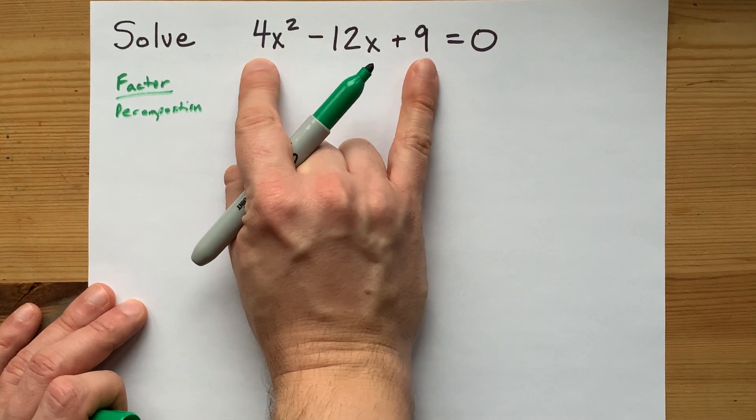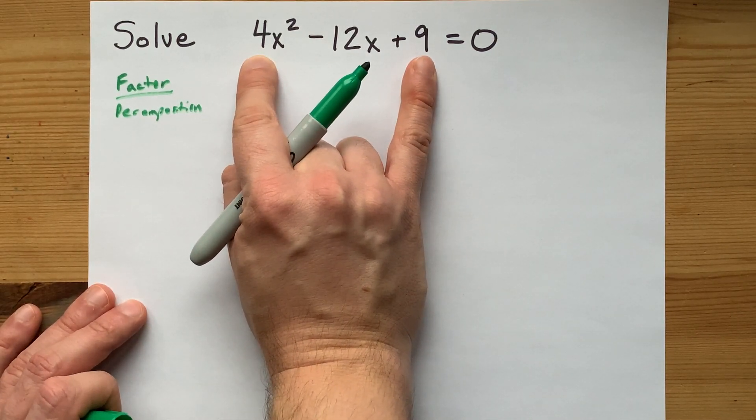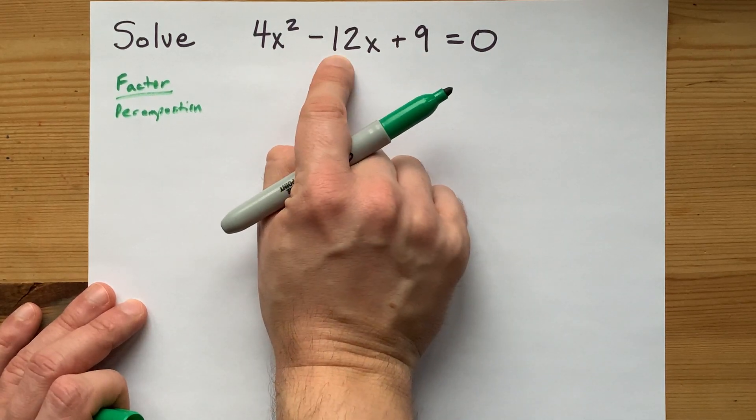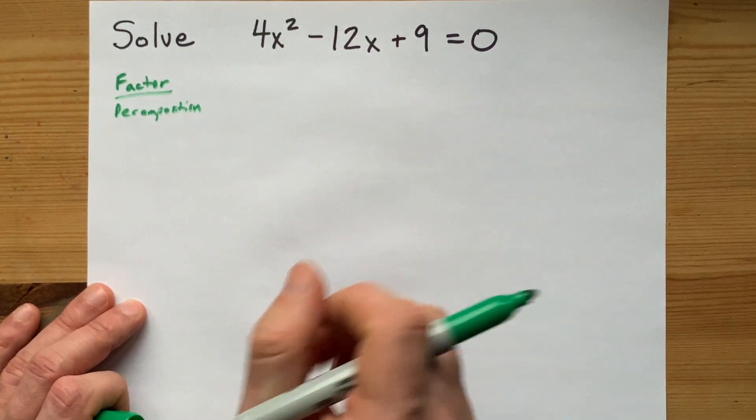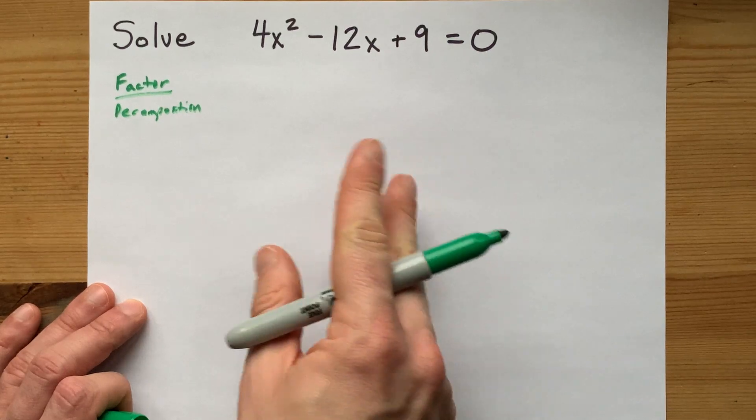And then they need to add to negative 12. If they need to multiply to positive 36, I need them both to be negative. The numbers are negative 6 and negative 6. It's two of the same number.